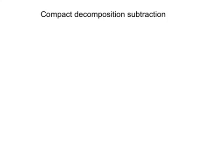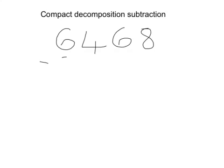Compact decomposition subtraction. When completing subtraction, ensure that the biggest number is written above the smaller number. We'll solve 6,468 subtract 2,689.